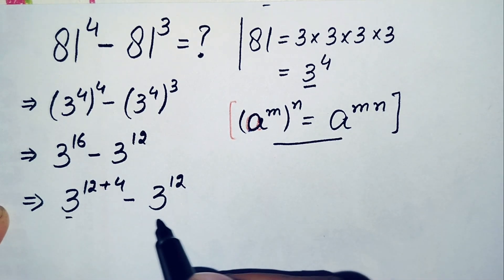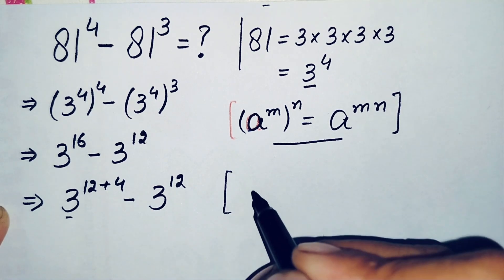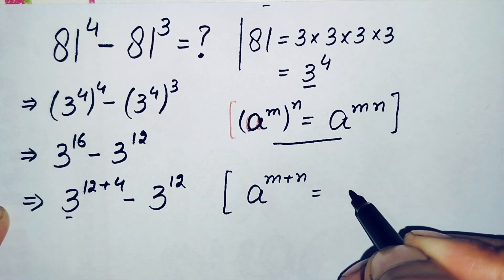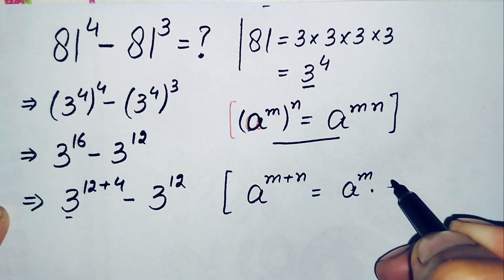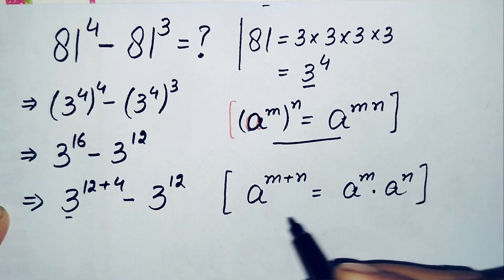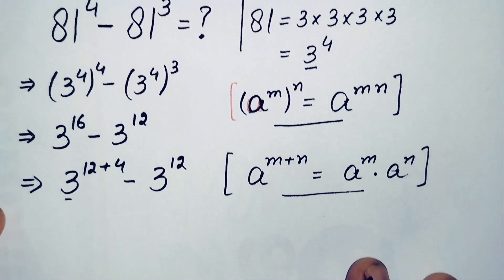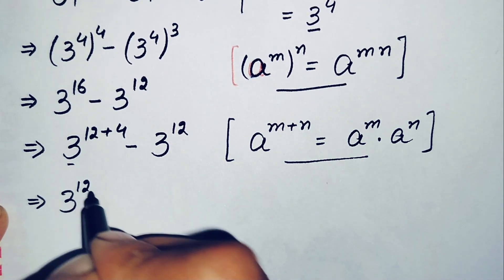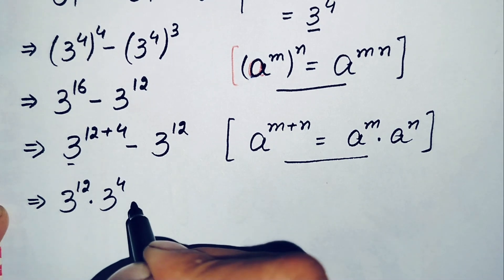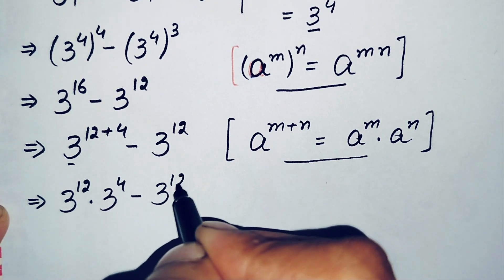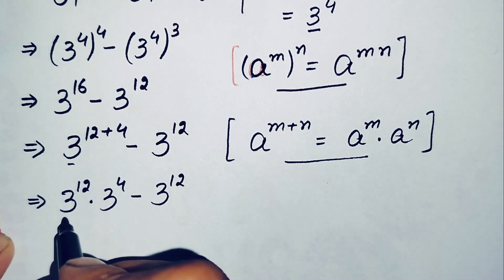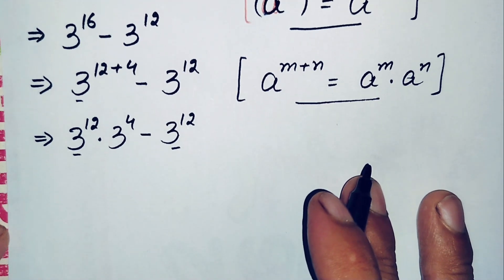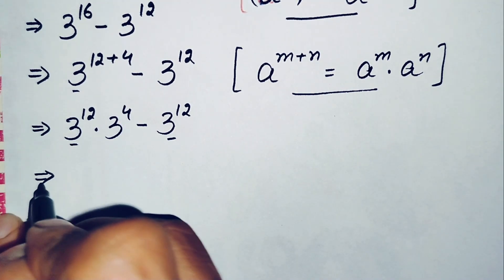Now in the first term we use another exponential property: a raised to power m plus n equals a raised to power m times a raised to power n. Using this property, the expression becomes 3 raised to power 12 times 3 raised to power 4, minus 3 raised to power 12. Since 3 raised to power 12 is common in both terms, we take it out as a common factor.